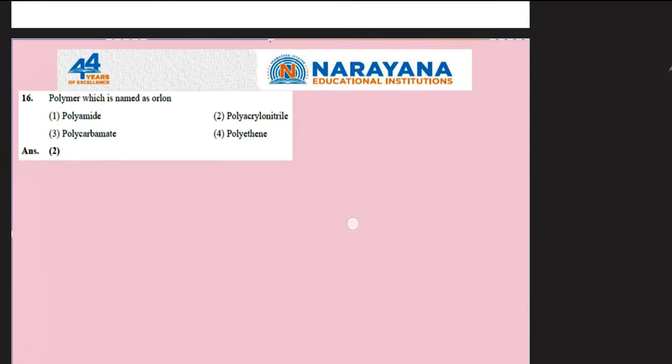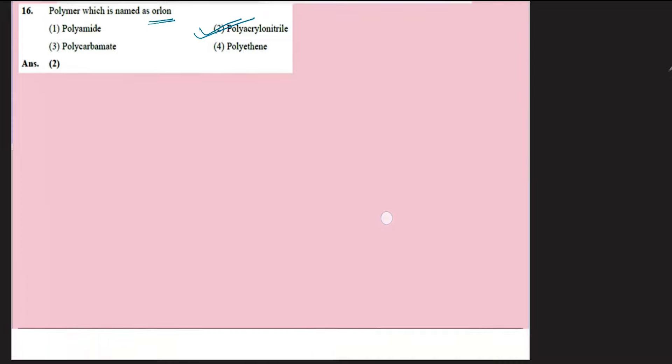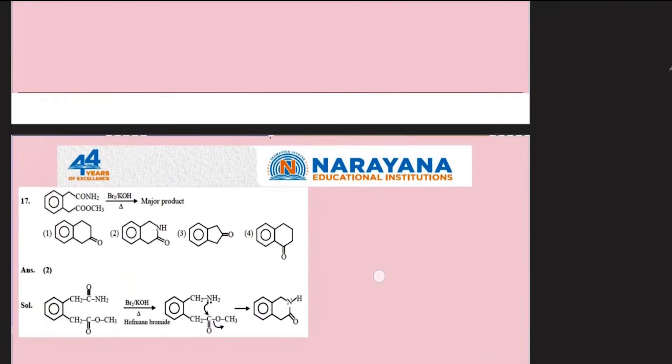The polymer named Orlon — Orlon, also called acrylon or artificial wool, is another name for polyacrylonitrile. This is a question from the polymers chapter.